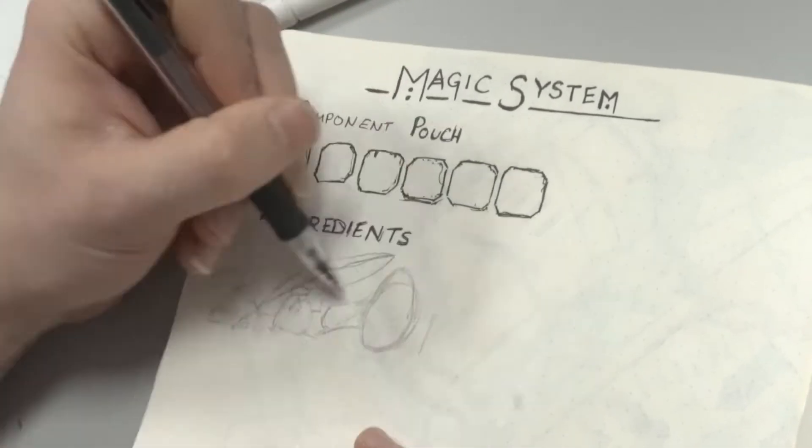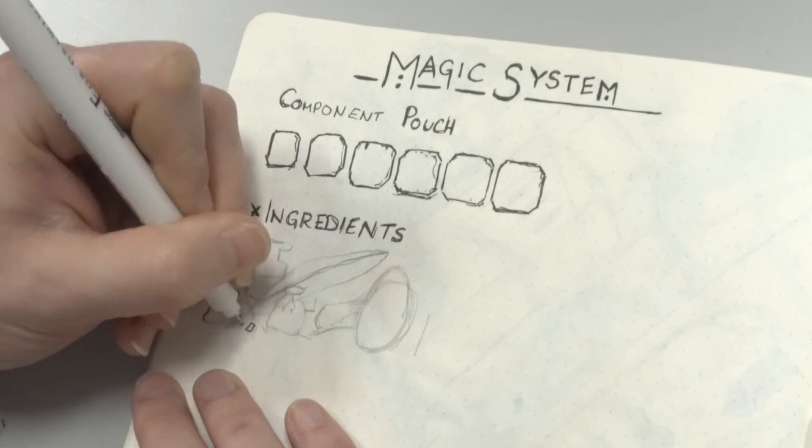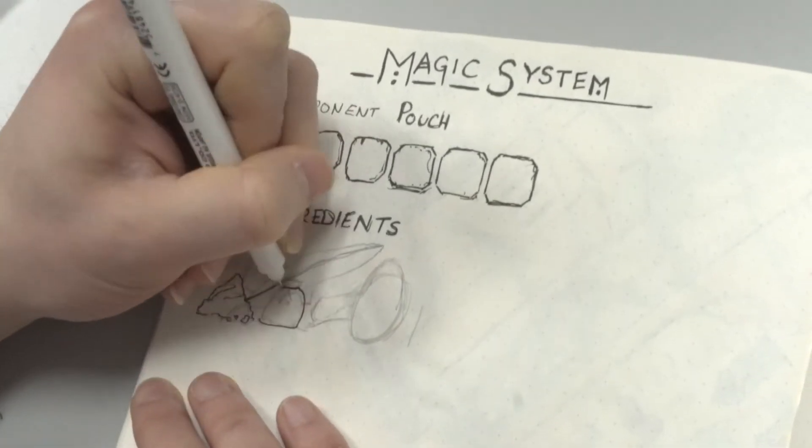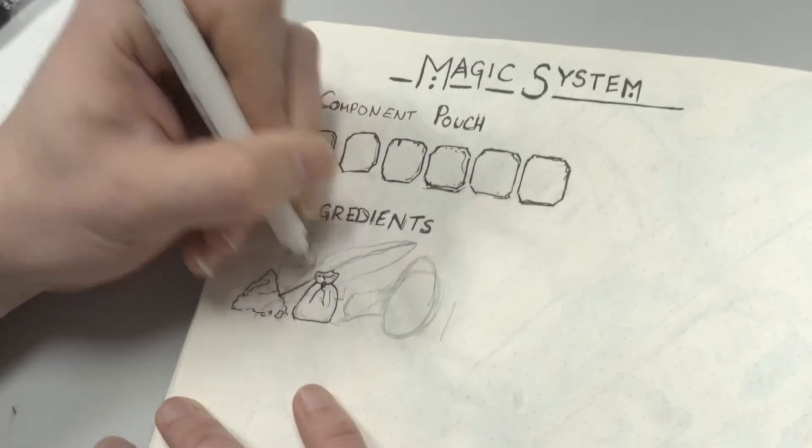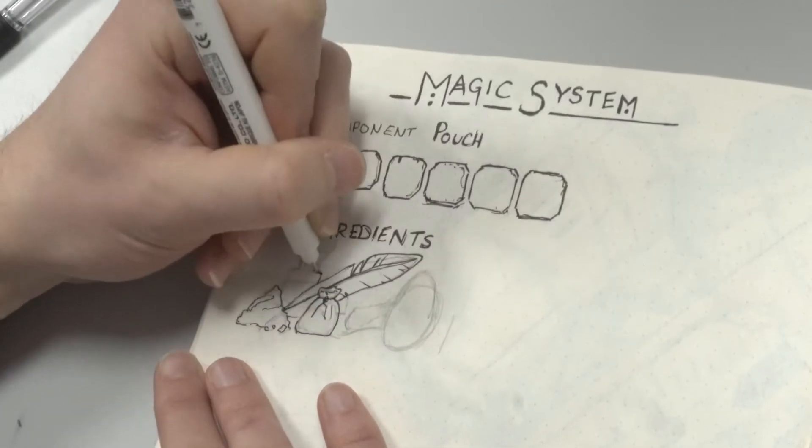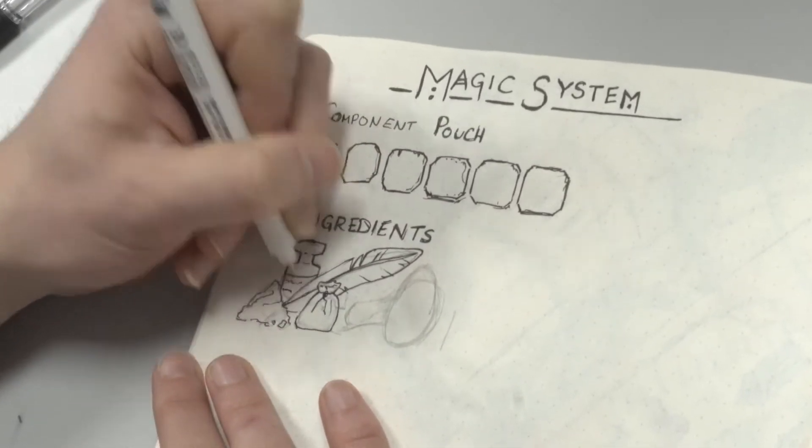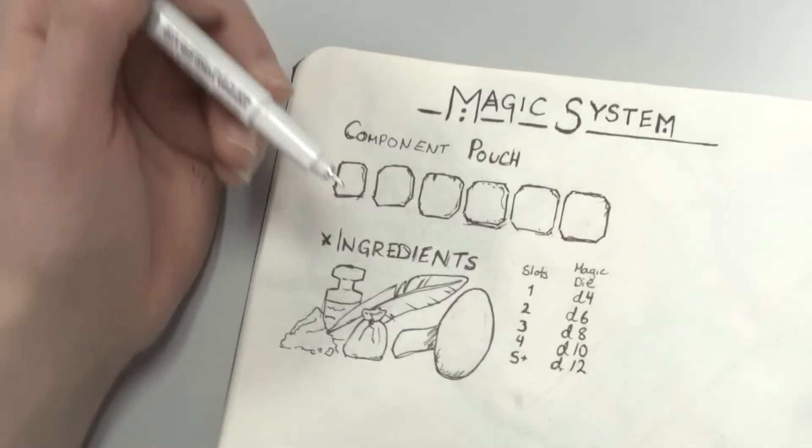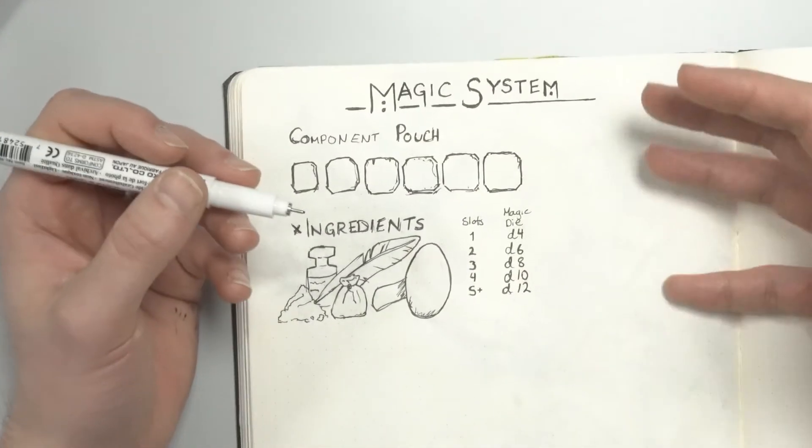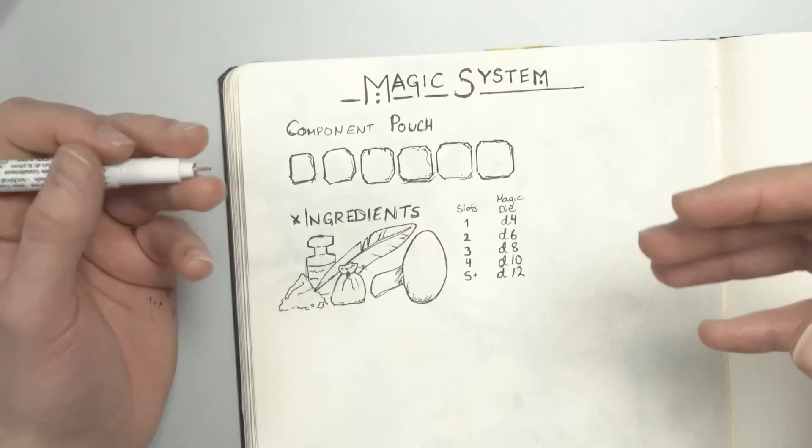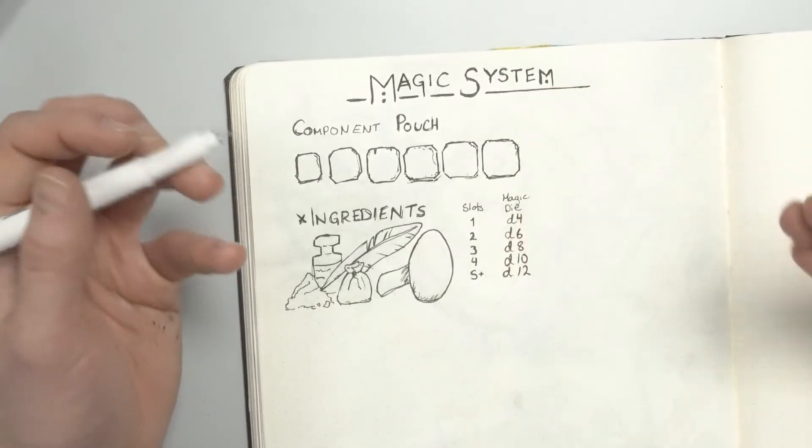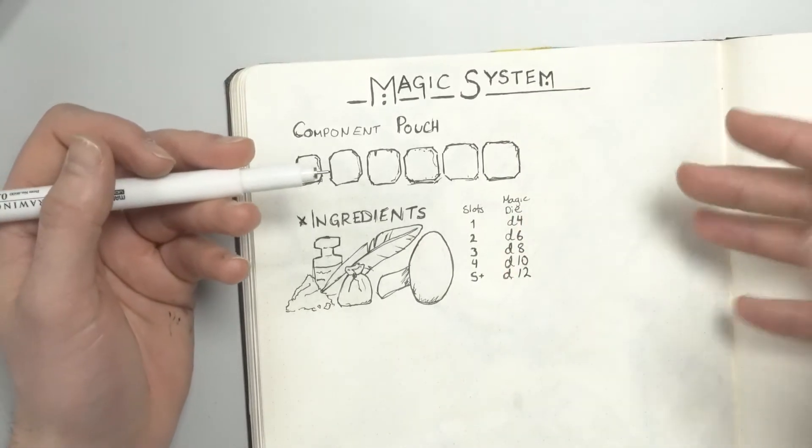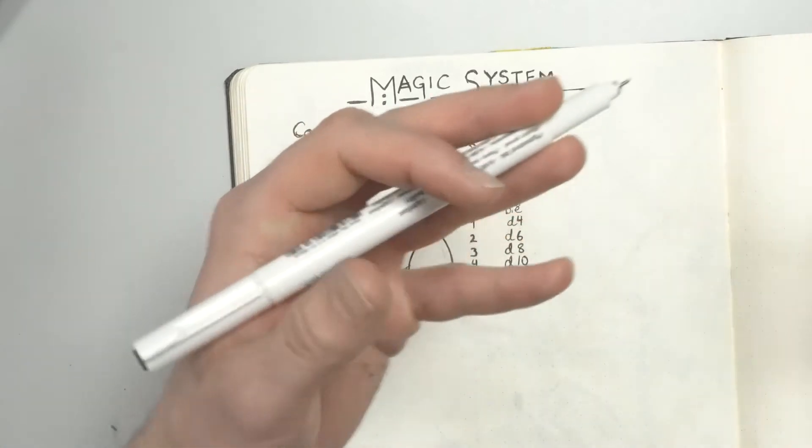Two slots with ingredients give you a d6 magic die. Three slots give you a d8, four a d10, five or more give you d12. Every time you cast a spell, you roll your magic die against the spell's cost. If you roll over, you succeed.